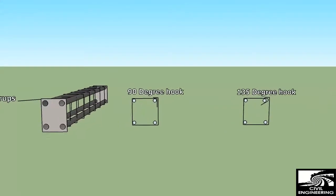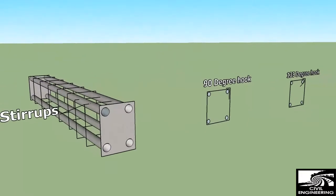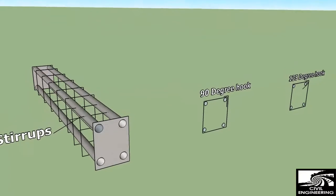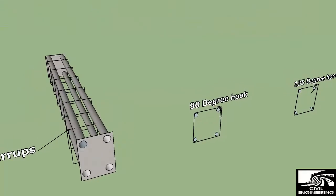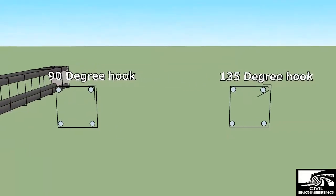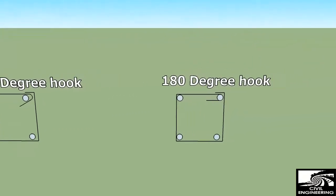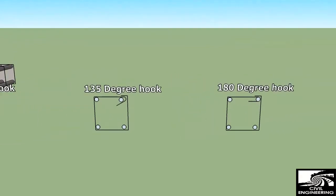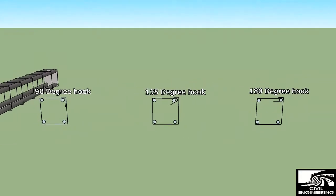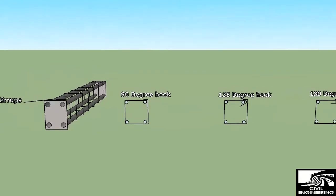In this video, I will show you how the stirrups are provided in beams and what are the hooks. These are the stirrups you see provided in beams, and these are the hooks: 90 degree hook, 135 degree hook, and 180 degree hook. These hooks are provided in stirrups to hold the longitudinal bars, and this should be provided according to the standards. I will show you on paper now.